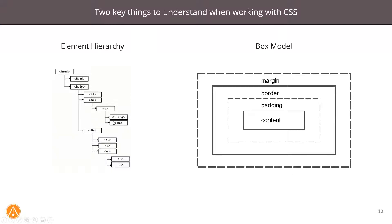The box model is key to understanding behavior, spacing, and so on. We've got our content in the middle, then padding, borders, margins, and the external dimension of the margin. There used to be a real problem where different browsers had different interpretations of the box model, but thankfully that era is over and pretty much all browsers render it the same way, which makes developing and writing CSS much, much easier.